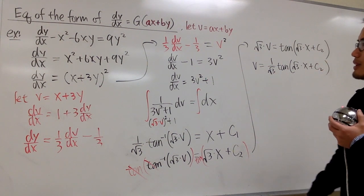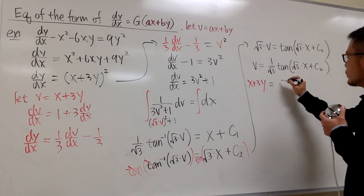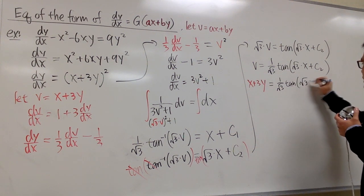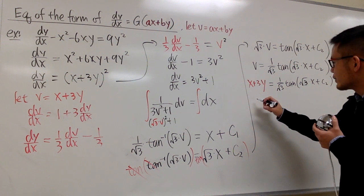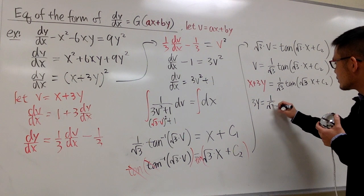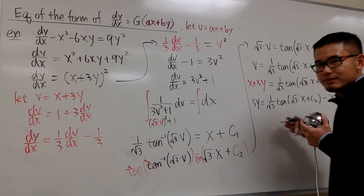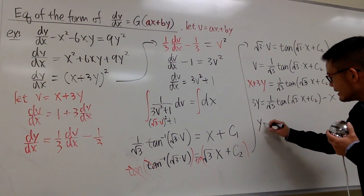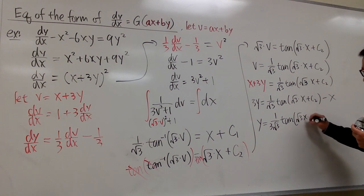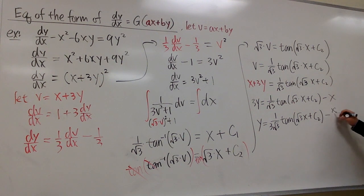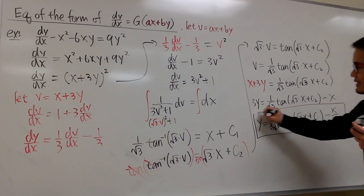We have v by itself, but we want y. Since v = x + 3y, we substitute: x + 3y = (1/√3)·tan(√3·x + C₂). Subtracting x from both sides: 3y = (1/√3)·tan(√3·x + C₂) − x. Dividing by 3: y = (1/(3√3))·tan(√3·x + C) − x/3. We've isolated y — that's the final answer!